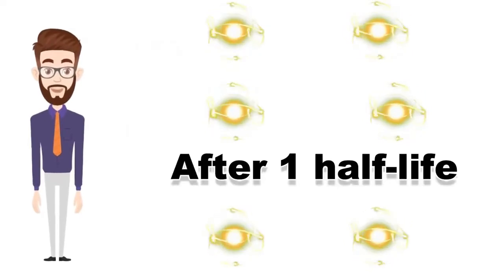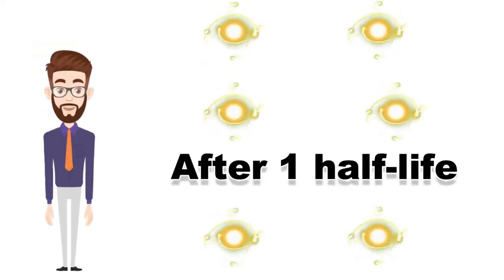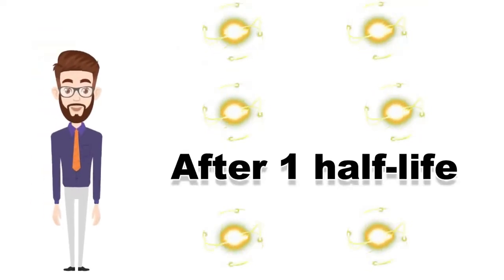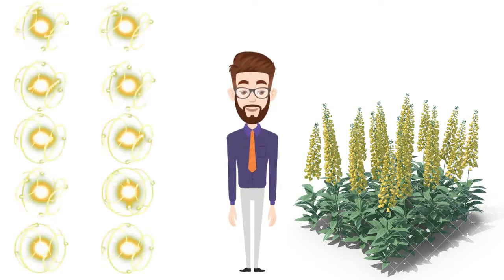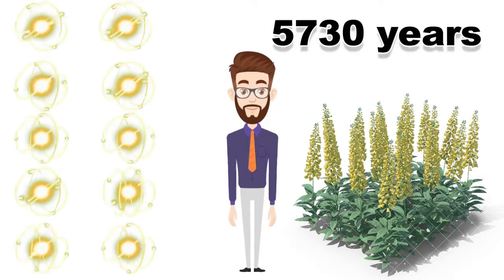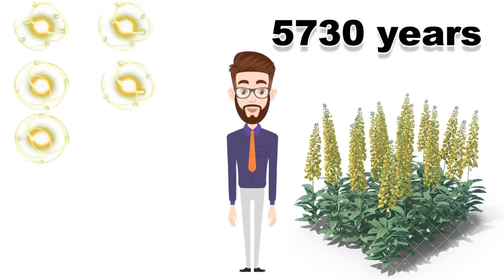Half-life is defined as the amount of time required to reduce to half of its parent amount. For example, if a plant dies today with 10 carbon-14 atoms in it, then after 5,730 years, there will be only 5 carbon-14 atoms.